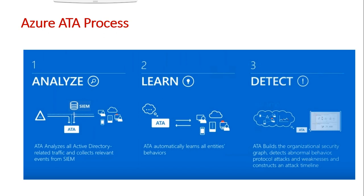ATP takes the lessons learned from ATA and is more of a cloud-based solution than an on-premises one. It can protect identities both on-premises and in the cloud, which is an interesting dynamic we'll explore. Azure ATA works on three premises: first, analyze all traffic coming and going through your Active Directory; second, collect relevant events from Active Directory; and third, if you're using a SIEM, Active Directory reports those events to the SIEM which then sends the information to ATA.